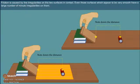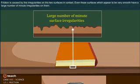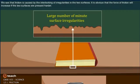Friction is caused by the irregularities on the two surfaces in contact. Even those surfaces which appear very smooth have a large number of minute irregularities on them. We see that the friction is caused by the interlocking of irregularities in the two surfaces. It is obvious that the force of friction will increase if the two surfaces are pressed harder.